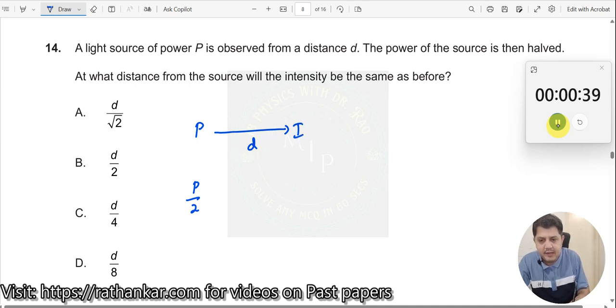So, let us find what is the intensity at this point. Intensity I at this point should be P divided by 4πd².